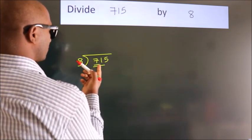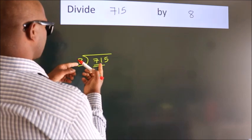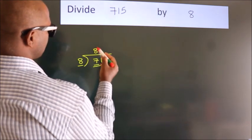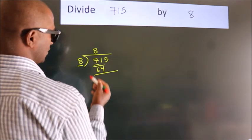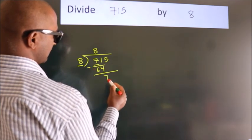A number close to 71 in the 8 table is 8 times 8 equals 64. Now we subtract and get 7.